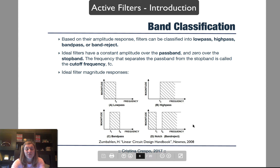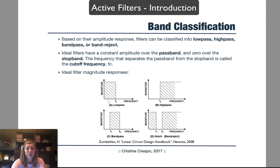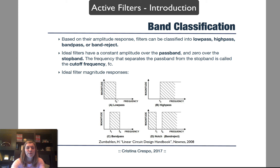These are ideal filter responses — they have a perfect sharp edge dividing the passband from the stopband, and the frequency that creates that division is known as the cutoff frequency. Real filters are never going to have these perfect shapes; rather, there will be a certain transition from the passband to the stopband, and based on the generic shapes of a real filter we can differentiate different regions.